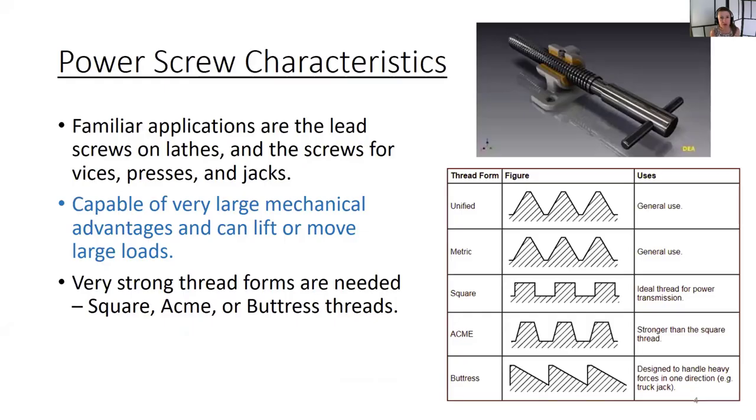Power screw characteristics: familiar applications are lead screws on lathes, which is what we just saw, and screws for vices, presses, and jacks. They're capable of very large mechanical advantages and can lift or move large loads. To do this, very strong thread forms are needed: square, acme, and buttress threads are all used.